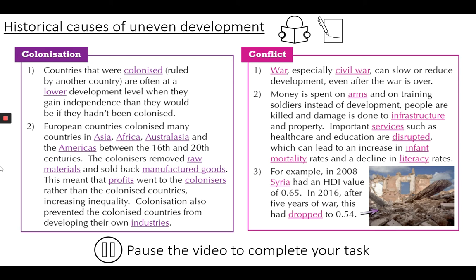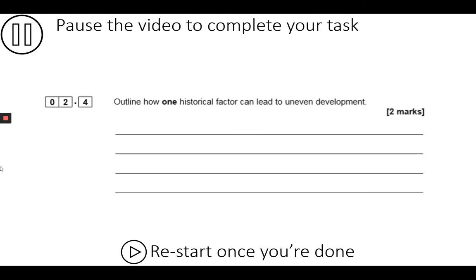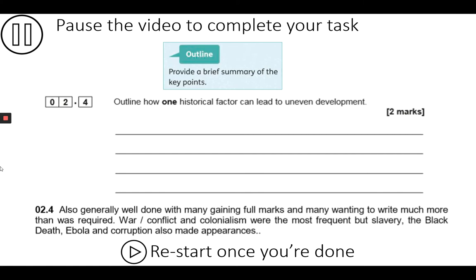Now we're ready to tackle that 2019 GCSE question. This is a two-mark question that uses the command term 'outline'. For this you're not writing too much, but you should make at least one point and then develop it. This is what was reported by the examiners following the 2019 exams — take your time to read all of this slide, then press pause to complete your response, restarting the video to see the mark scheme.